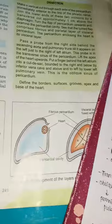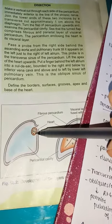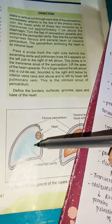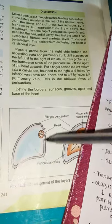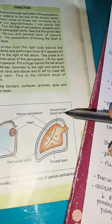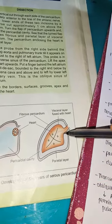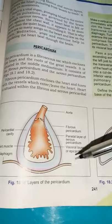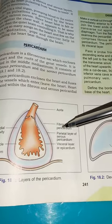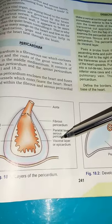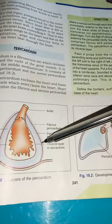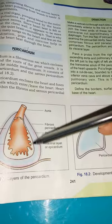Looking at the diagram, we can see the developing heart invaginating into the serous sac. The outer fibrous pericardium is present with the pericardial cavity inside. The visceral layer is fused with the heart, while the parietal layer is outward, and the gap between them forms the pericardial cavity. The fibrous pericardium sticks to the parietal layer of serous pericardium on the deep surface, while the visceral layer or epicardium lines the heart.